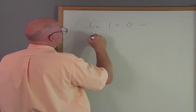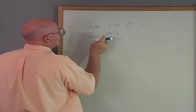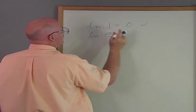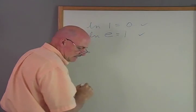If we have the natural logarithm of E equals, well, that's E to the something equals E. Oh, it must be a 1 because E to the 1 power equals E. That makes sense.